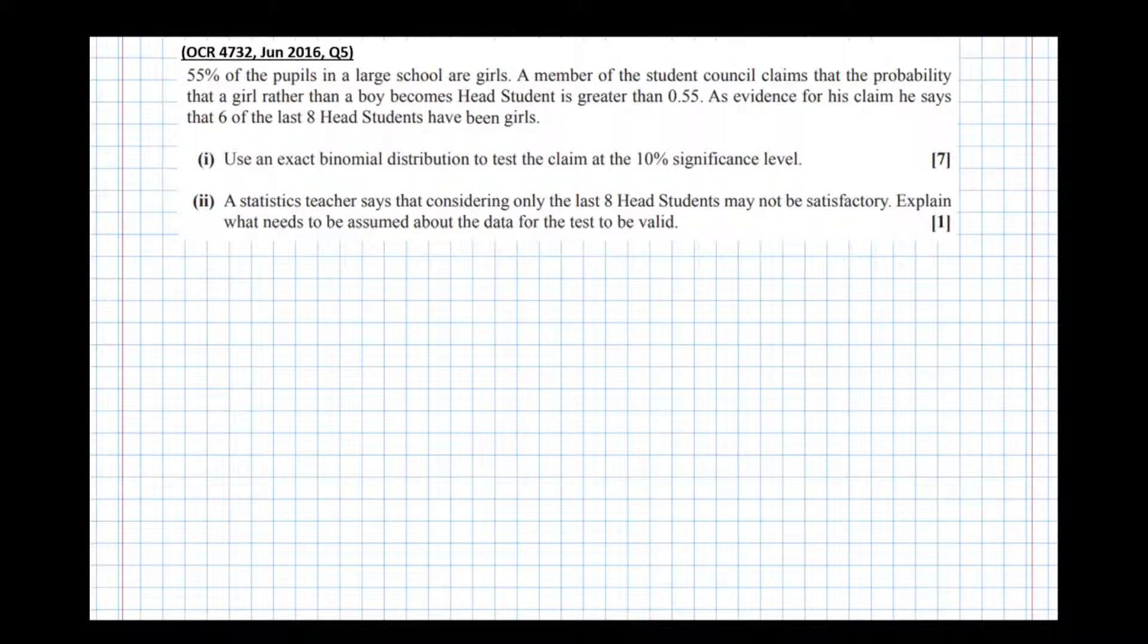So basically, what we expect, since 55% of the pupils in a large school are girls, we expect over the years 55% of them to become head student. So that's our expectation. That's our null hypothesis. Someone else has claimed as an alternative hypothesis, they've challenged the null hypothesis. They've said, actually, girls are better than boys at becoming head student. So I reckon the proportion of girls becoming head student is actually going to be more than 55%. And in this question, that's the argument that we're trying to settle.